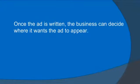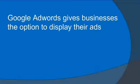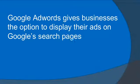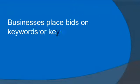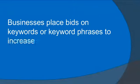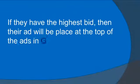Once the ad is written, the business can decide where it wants the ad to appear. Google AdWords gives businesses the option to display their ads on Google search pages or on other websites. Businesses place bids on keywords or keyword phrases to increase their visibility. If they have the highest bid, their ad will be placed at the top of the ads in Google search.